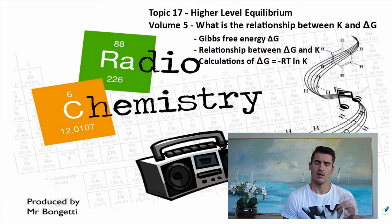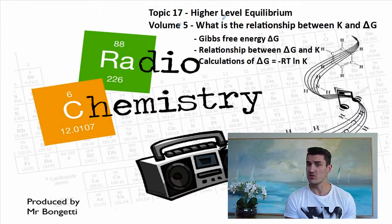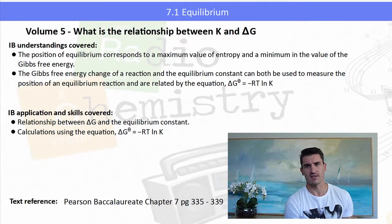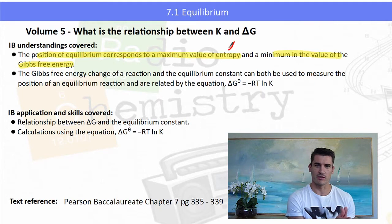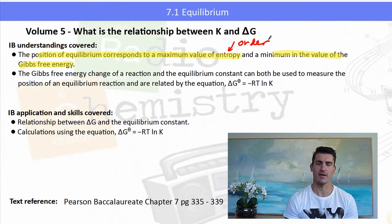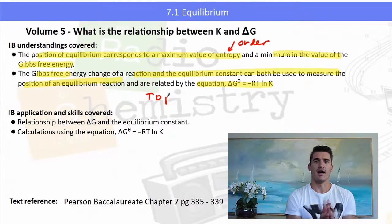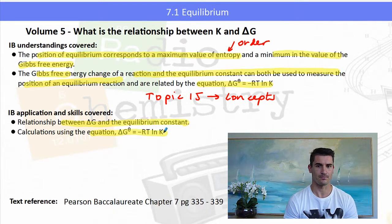Topic 17 - High-Level Equilibrium, Topic 2 of Volume 5: what is the relationship between K, the equilibrium constant, and delta G? Delta G is known as the Gibbs free energy, which will come up in Topic 5. This particular topic will be a little more challenging than normal because you don't yet have a great understanding of delta G. We need to be able to work out the position of equilibrium, and it might be good to check out the text reference as well.